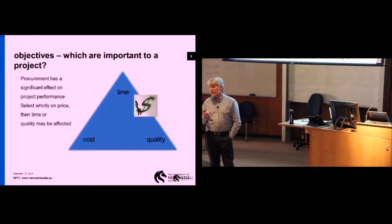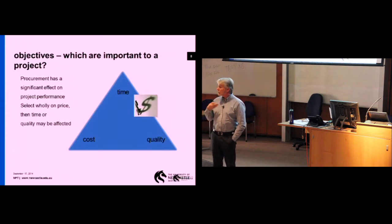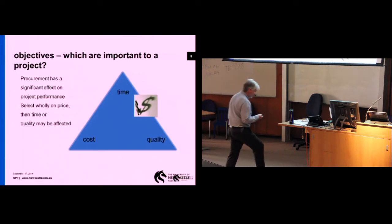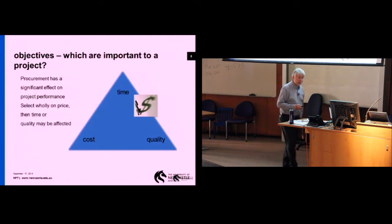For example, if time is up the top and quality is here, a move toward time could be something like an Olympics, an Olympic Games. You can't change the date when the Olympics starts, so you have to focus on the time. In an Olympics, there's a great deal of community pride, national pride involved, so you want it to be a quality type of project. So by moving that dollar sign symbol around, you can review the types of projects.